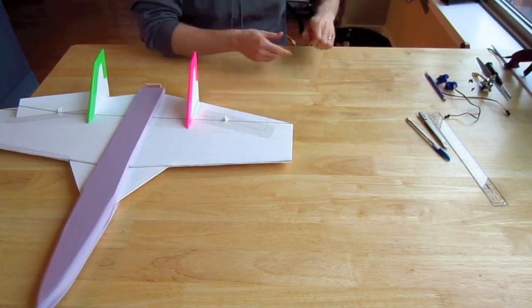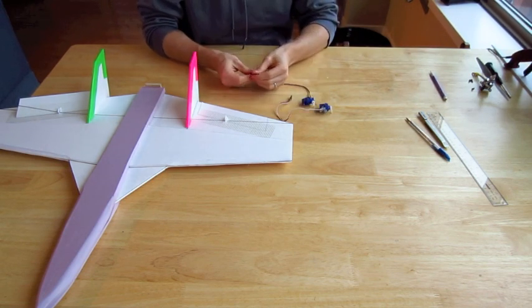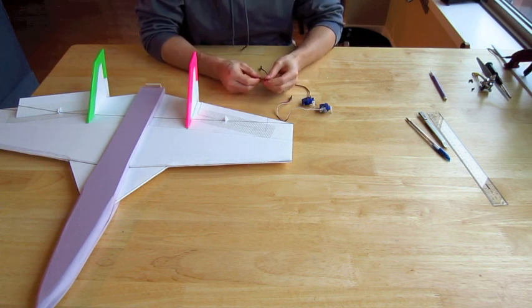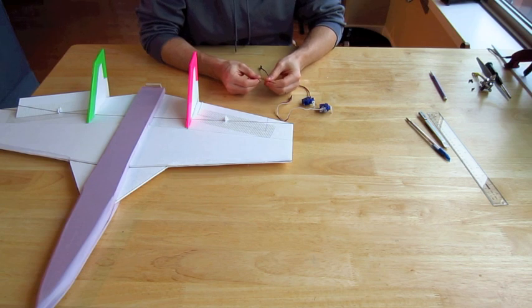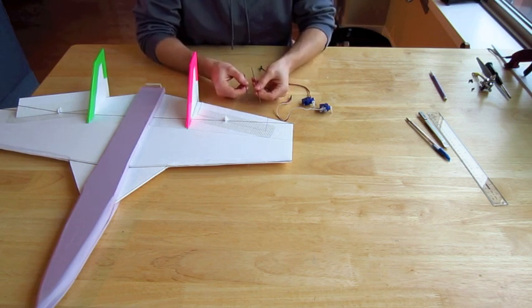You need two servos for this plane and then two control horns. I made these. I have a video about how I make my push rods. You can check that out, but I made these. So it's 13 centimeters long from here to here, not including these little Z bends and I create them.